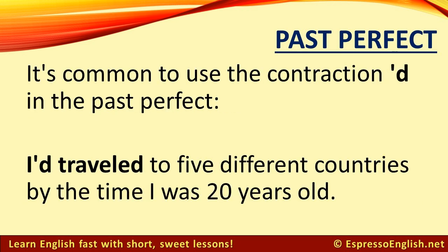It's common to use the short form — the contraction apostrophe 'd — in the past perfect. For example: "I'd traveled to five different countries by the time I was 20 years old."